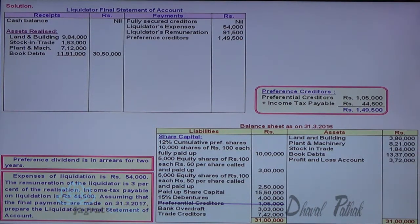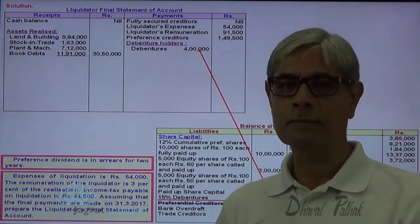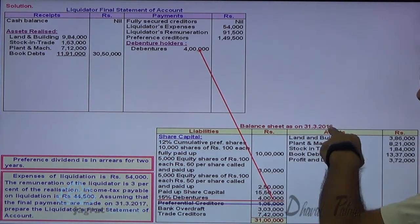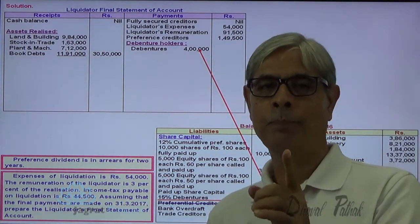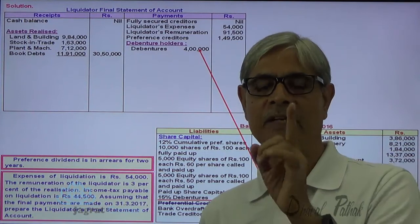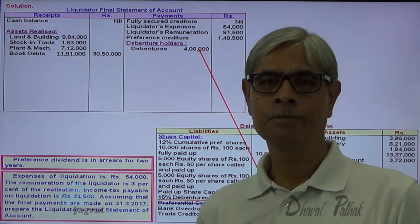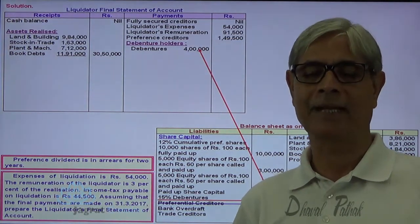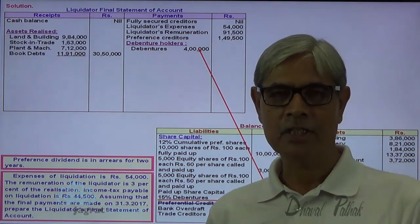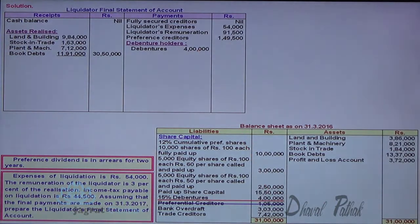After preferential creditors, pay the debenture holders: 4,50,000 is the amount payable. The date of liquidation is 31st 2016 and final payment was made on 31st 2017 — one year later. Should we pay them one year's interest? The answer is: if we have got sufficient funds to pay unsecured creditors, then we should pay interest till the date of payment to the debenture holders. Let me work out the cash balance.